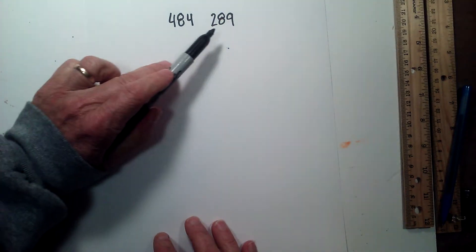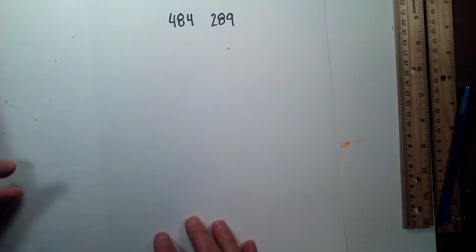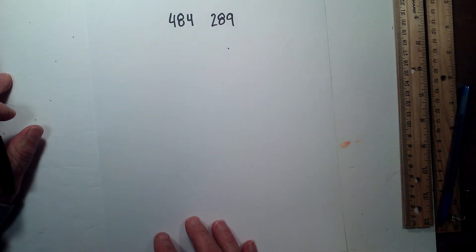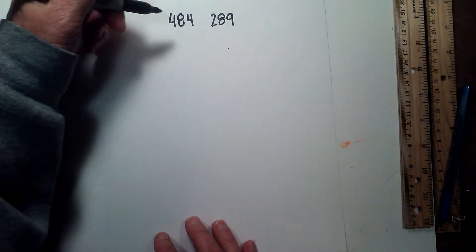Science and the prime factorization of 484 and 289. Prime factorization is finding which prime numbers multiply together to equal the original number.